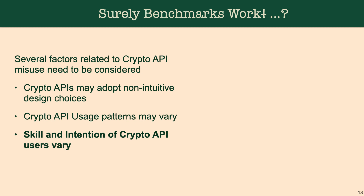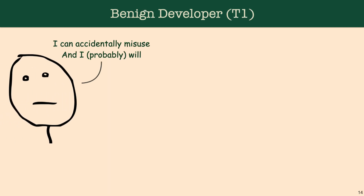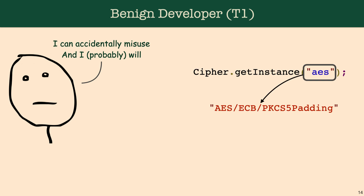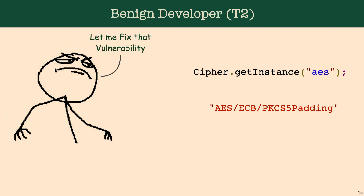We construct three different types of users based on their skills and intentions in our threat model. The first is a benign developer who doesn't know too much about cryptographic APIs and will probably misuse them. For example, he will probably write AES in lowercase, which is non-standard in terms of convention but still acceptable in Java, and of course it will default to ECB mode.